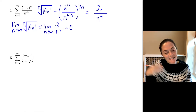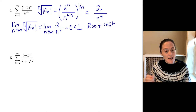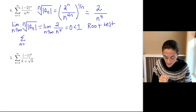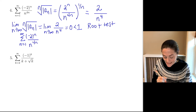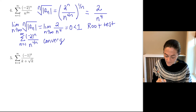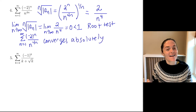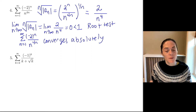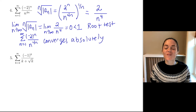We take the limit as n goes to infinity of the n-th root of the absolute value of a_n, which is the limit as n goes to infinity of 2 divided by n to the 4th power. This limit is 0 — the denominator is growing without bound. This is less than 1. The root test tells us that this alternating series converges absolutely. So we have converges absolutely.